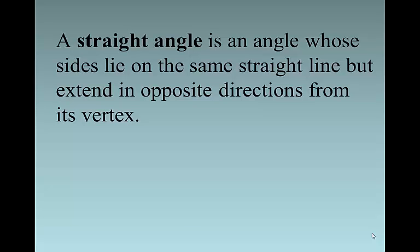A straight angle is an angle that can, oh, those are the angles that can marry in all 50 states. That's a little humor there. A straight angle is an angle whose sides lie in the same straight line but extend in opposite directions from its vertex. Commonly known as a 180 degree angle. That's not rocket science there, is it?